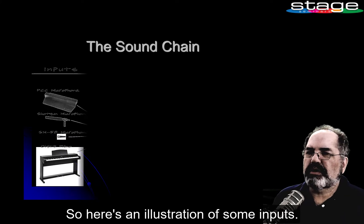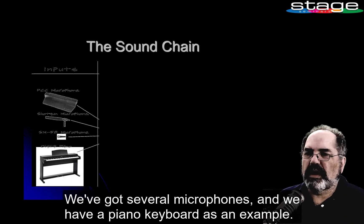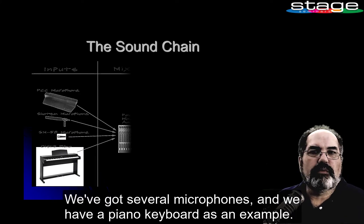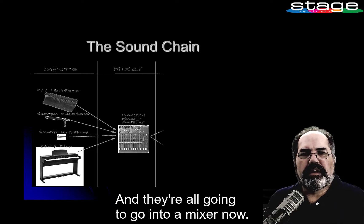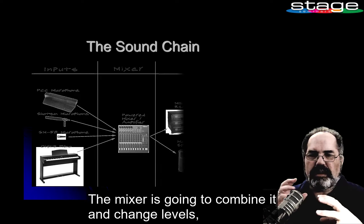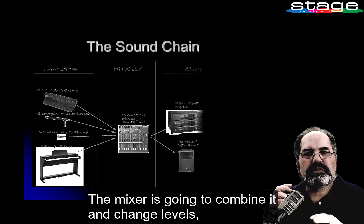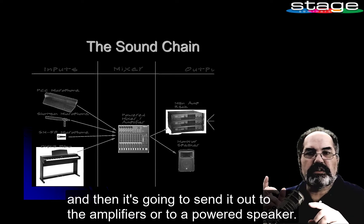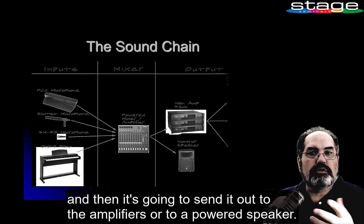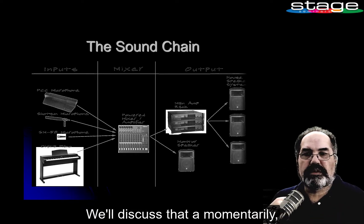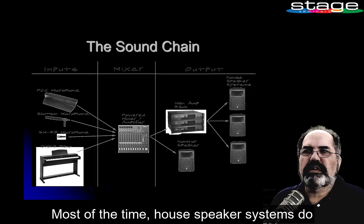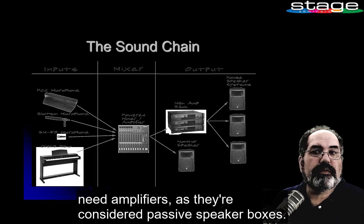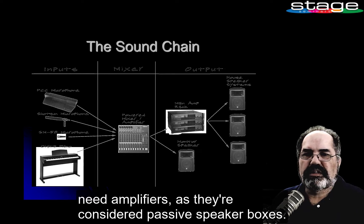Here's an illustration of some inputs: we've got several microphones and a piano keyboard as an example, and they're all going into a mixer. The mixer combines the signals and changes levels, then sends it out to the amplifiers or to a powered speaker. The amplifier sends it out to the house speaker system, which most of the time needs amplifiers as they're considered passive speaker boxes.